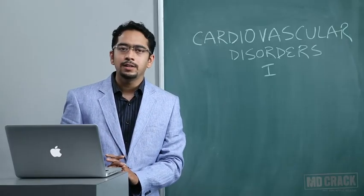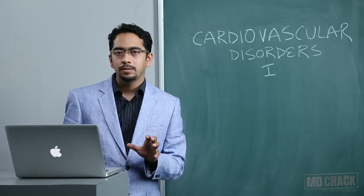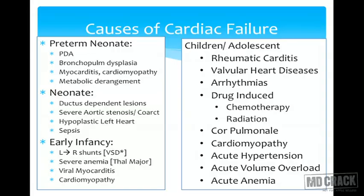Causes of cardiac failure are often age specific. In a preterm neonate, common causes include patent ductus arteriosus, acute respiratory distress syndrome giving rise to bronchopulmonary dysplasia, myocarditis, and metabolic derangements like hypocalcemia and hypomagnesemia. In a full-term newborn we have structural lesions such as coarctation of aorta, critical aortic stenosis, or left ventricular hypoplasia. There are also conditions which are dependent on the ductus, which we will deal with shortly.